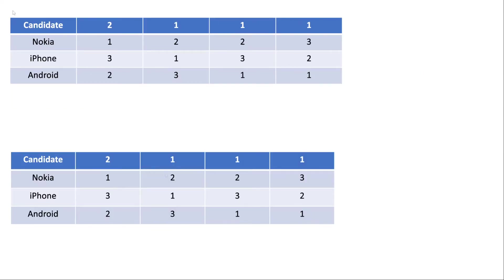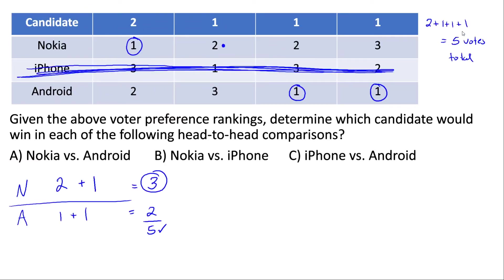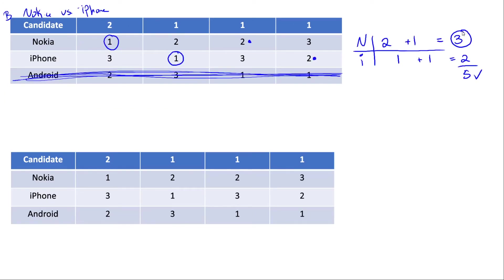Now let's take a look at part B: Nokia versus iPhone. We get rid of Android and see how everybody votes. Two voters still have their first choice, so they vote for it. One voter's first choice is still there, so they vote for it. Two other voters each choose between their second and third choice, and both pick their second choice as more preferred. Nokia ends up with three votes and iPhone gets two votes, adding up to five. Nokia won against Android and also won against iPhone, so Nokia is a Condorcet winner because it won every head-to-head comparison it could be in.